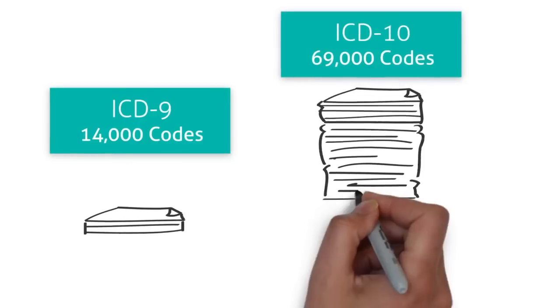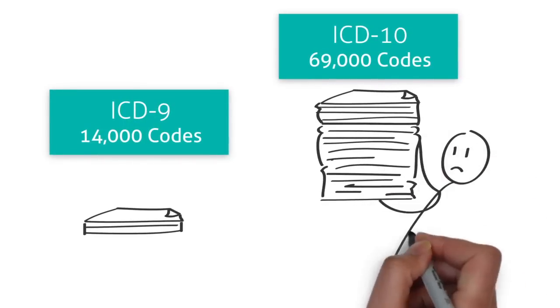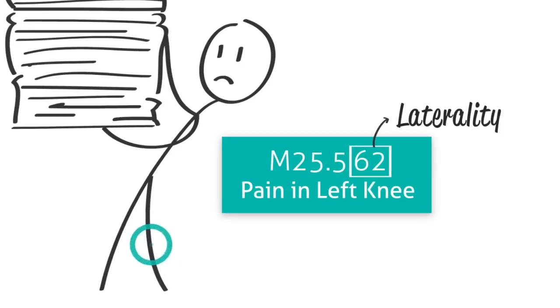So you may ask, how am I supposed to learn 69,000 codes? Don't get too scared. A chunk of those new codes have to do with laterality or location on the body.